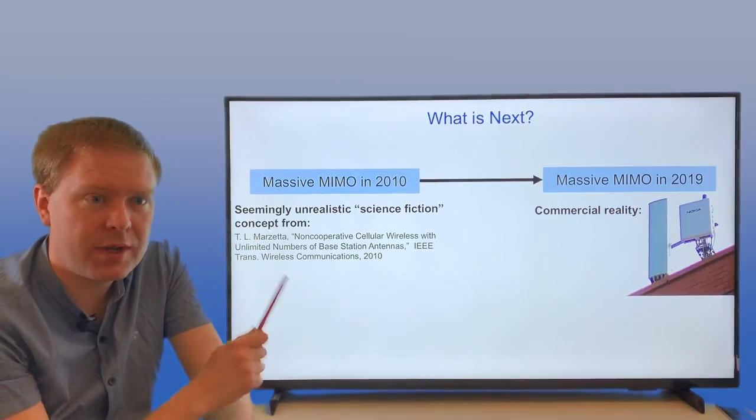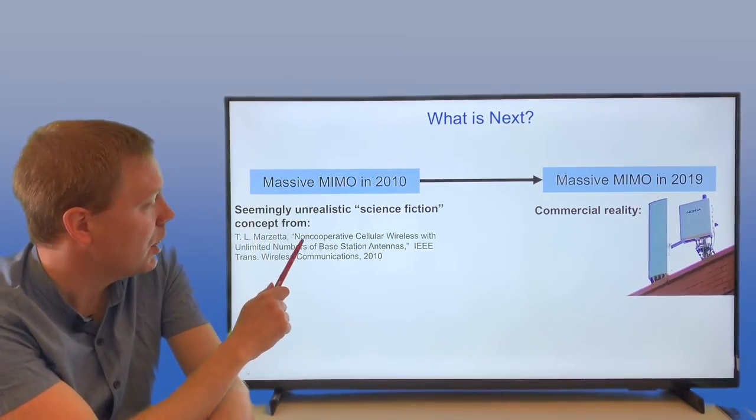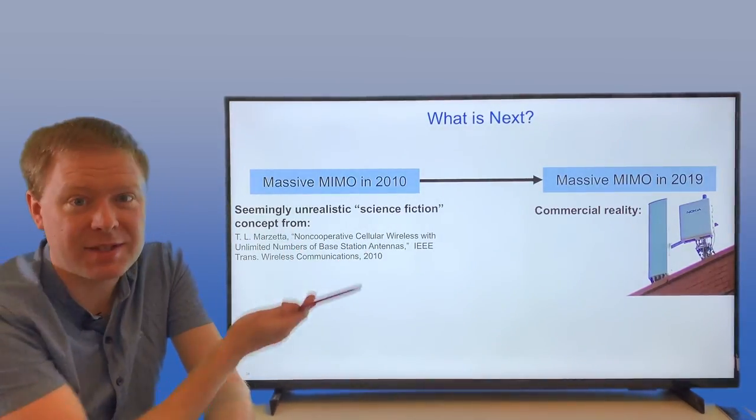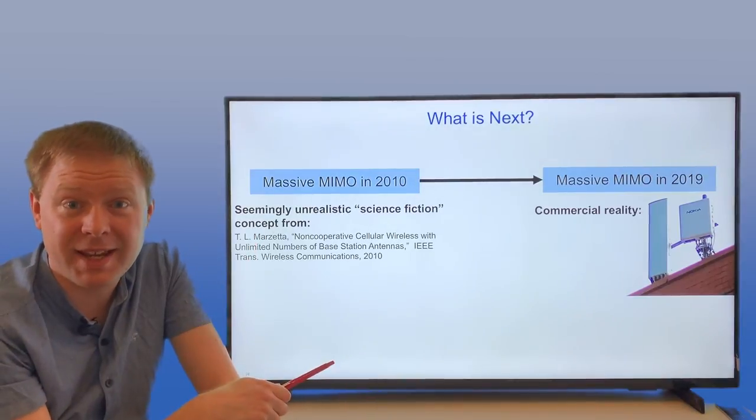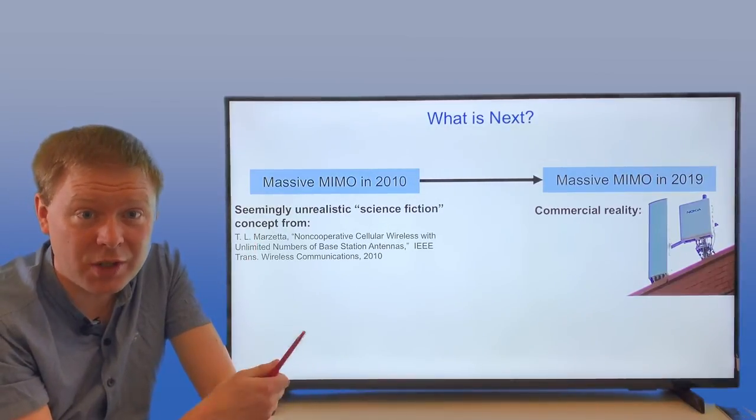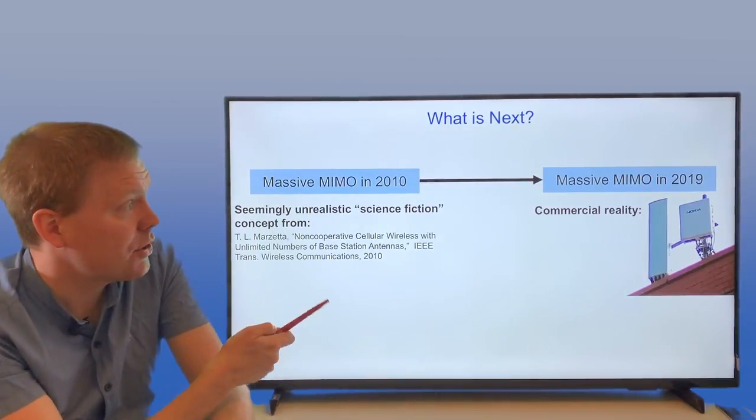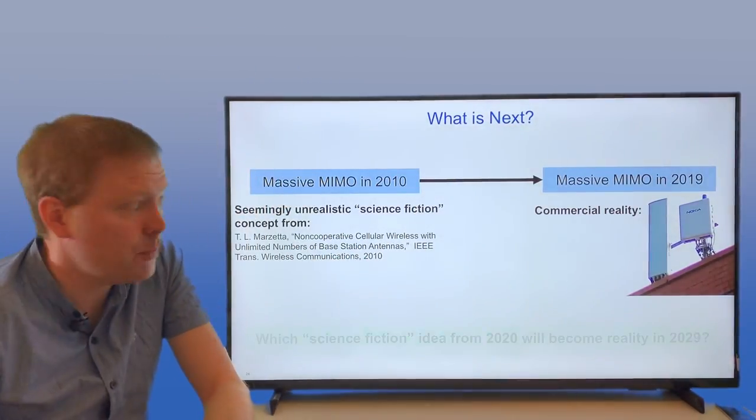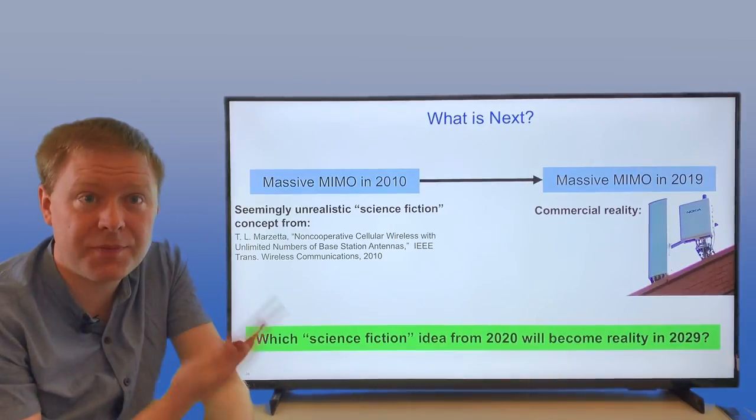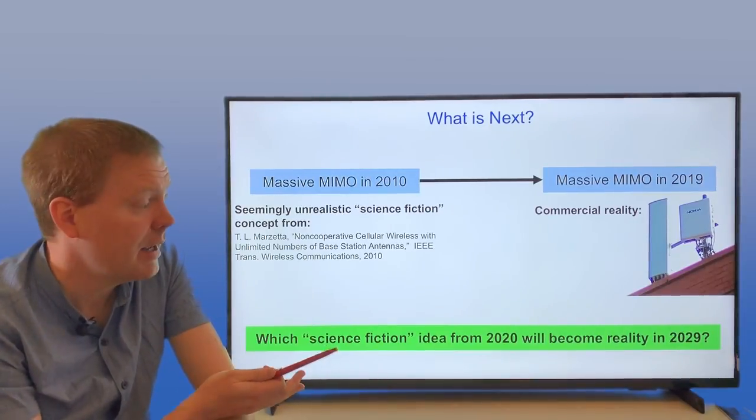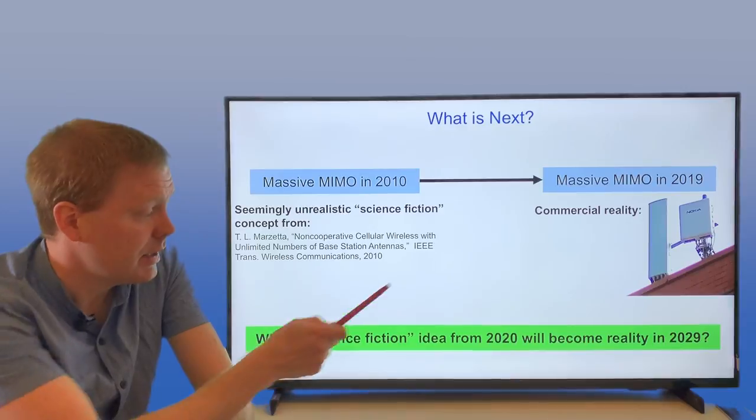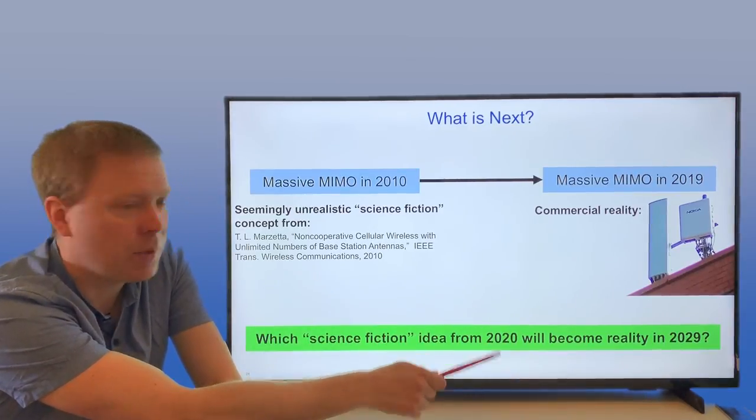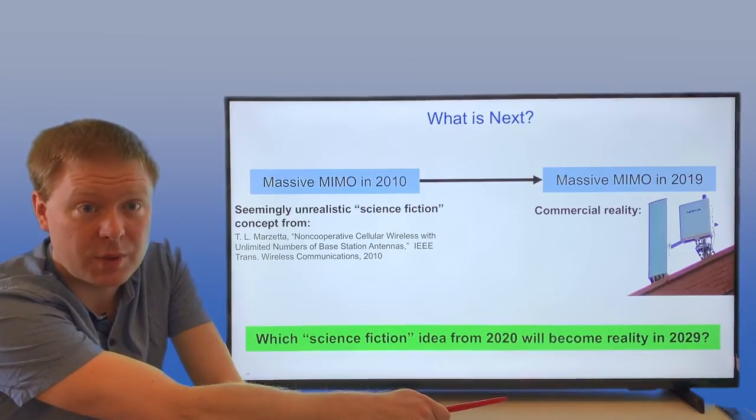So what is next? Massive MIMO appeared in 2010. Thomas Marzetta's paper, 'Non-cooperative cellular wireless with unlimited number of base station antennas,' was considered science fiction. You can't have an infinite number of antennas in the finite-sized world. But then it turns out that 10 years later, it's a commercial reality. In the same way, we need to think about which science fiction-like technologies for communication applications can we think about in 2020, and which one will be reality in 2029.